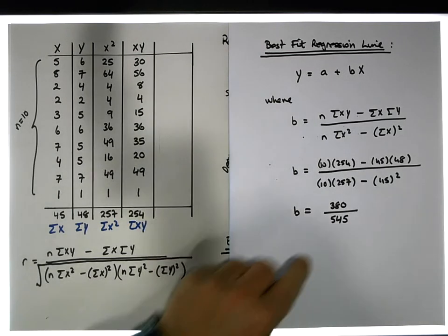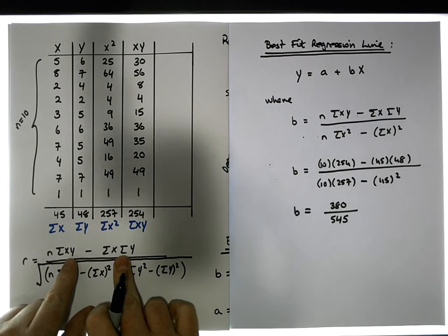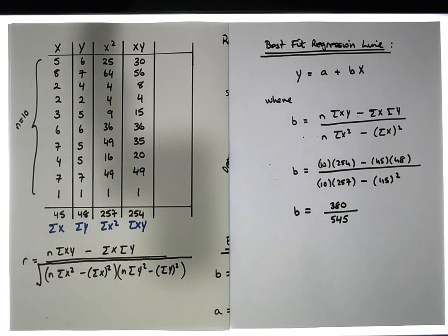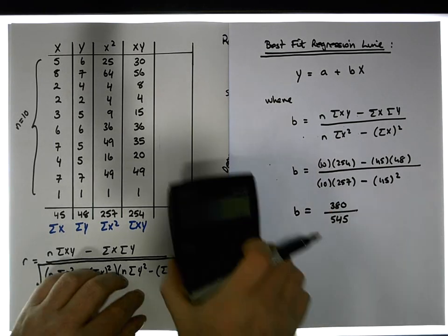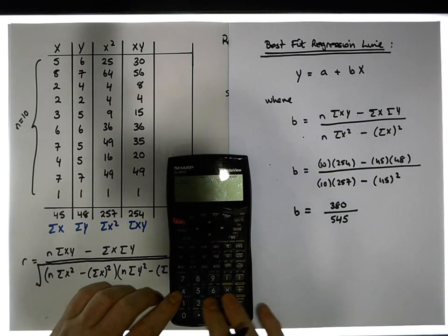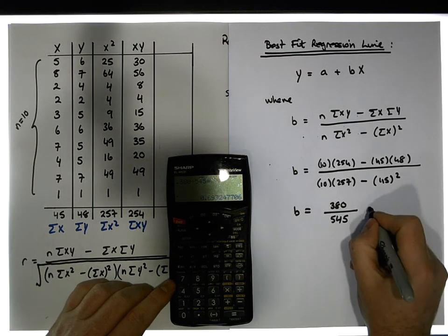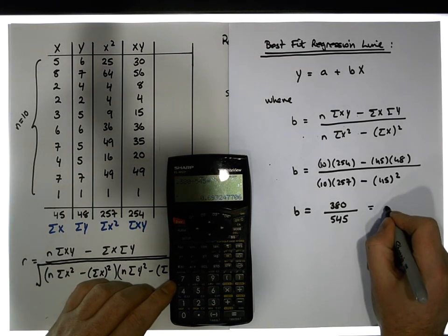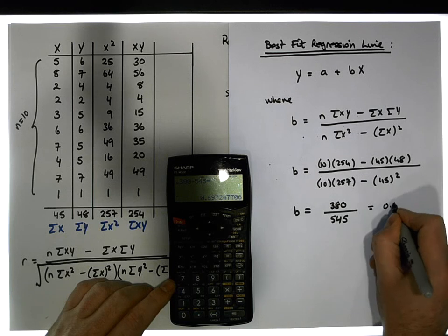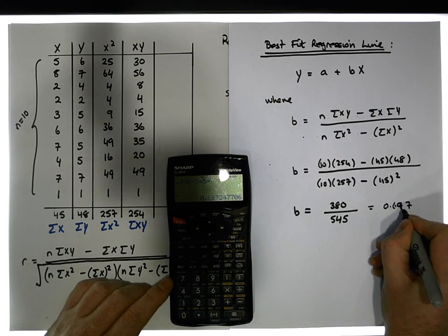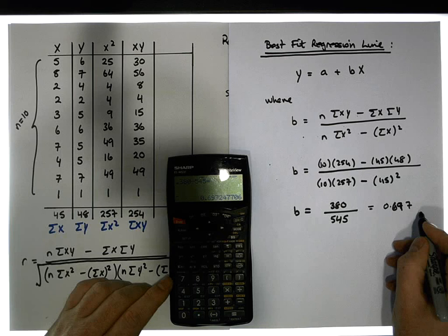We've seen that in our previous video, those two values, this particular numerator and this part of the denominator here. So when I do the division here I end up with 380 divided by 545 gives us a value of approximately 0.697. So it's 0.697 is the slope of this best fit line.